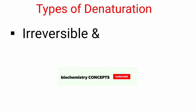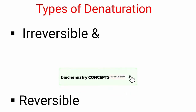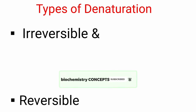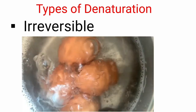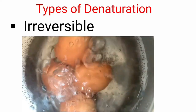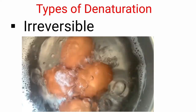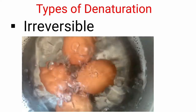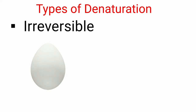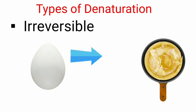Coming to types of denaturation, there are two types: irreversible and reversible. Irreversible is usually seen in case of proteins — for example, when you boil a raw egg, it leads to reversible denaturation. Another example is that an omelette can be prepared from an egg, but the reversal is not possible.